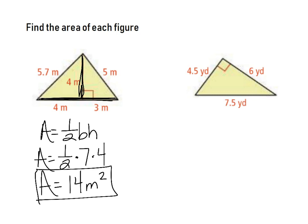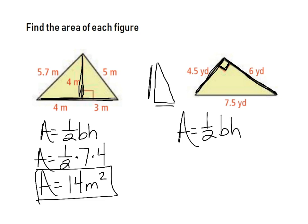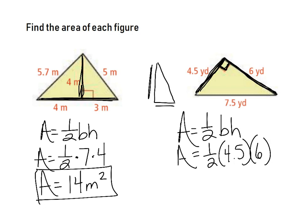On this next triangle, there's no extra altitude drawn in because it's a right triangle — there's already a perpendicular set. You could look at the 6 yards as the height dropped perpendicular to the 4.5, making 4.5 the base. It's just turned sideways. Area equals one-half times 4.5 times 6, which gives 13.5 yards squared.